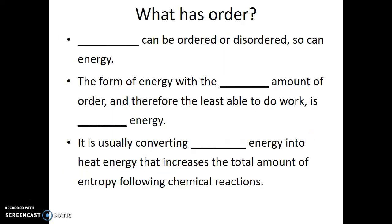So what is it that can have order? Matter can be ordered or disordered, so can energy. The form of energy with the least amount of order, and therefore the least able to do work, is heat energy. It is usually converting stored energy, which is more ordered and organized, into heat energy that increases the total amount of entropy following chemical reactions.